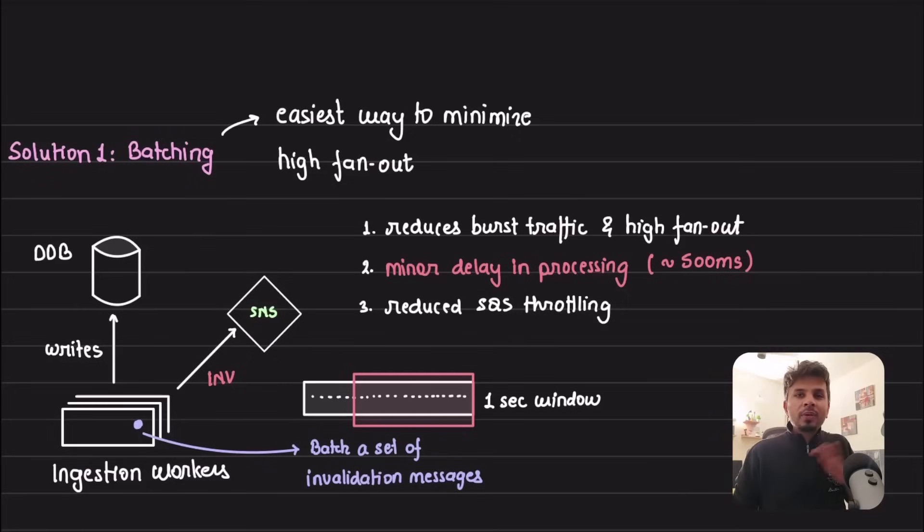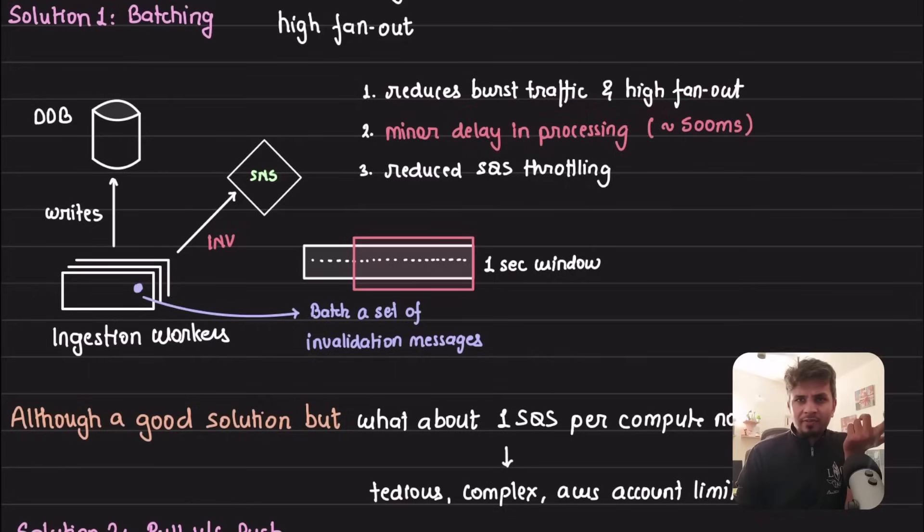You're thinking of an easy solution - why send one message for every invalidation request? Let's just batch them. Whenever you see potential to batch stuff, always do that. That's the lowest hanging fruit that you have and you should leverage it. Instead of sending one invalidation message for every update, try to batch the invalidation messages and then send one message in one shot. If you just wait for one second and get 10 messages, you literally have slashed your total number of messages by a factor of 10, which is pretty awesome. Batching helps you reduce burst traffic.